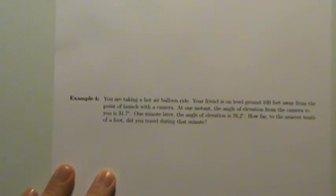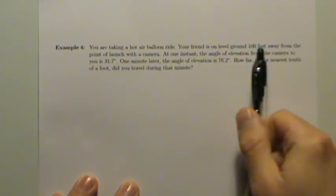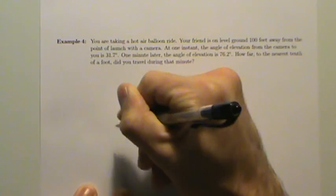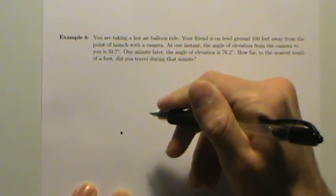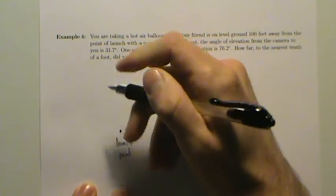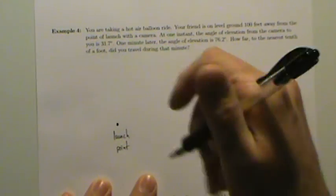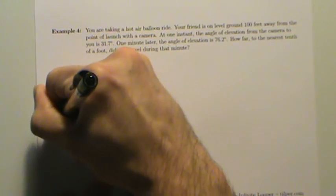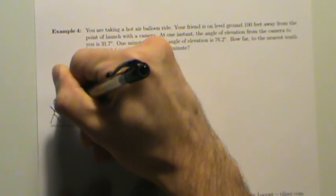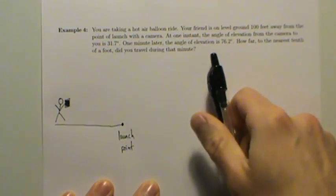Let's zoom out and draw a picture to illustrate what's happening. We're talking about riding a hot air balloon, so here will be our launch point. The balloon is going straight up, and the friend is on level ground 100 feet away holding a camera.